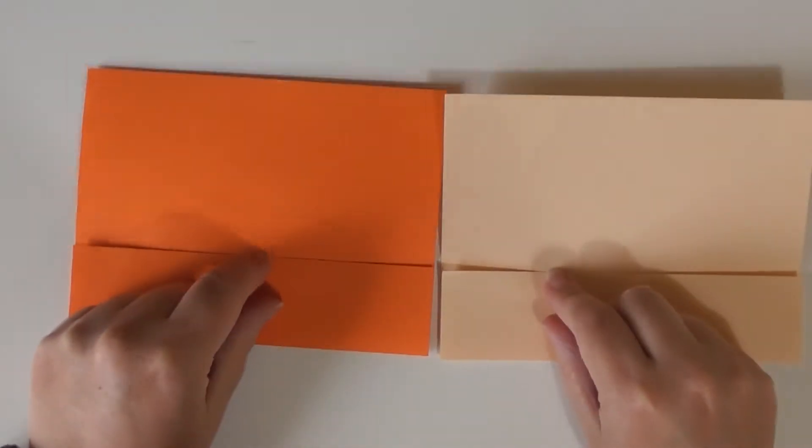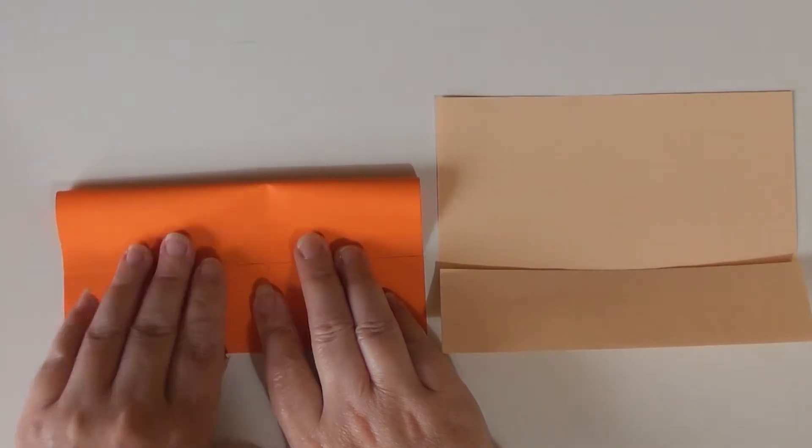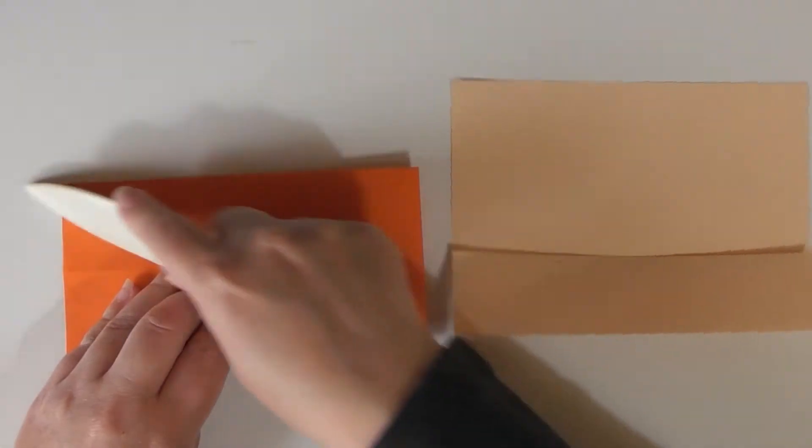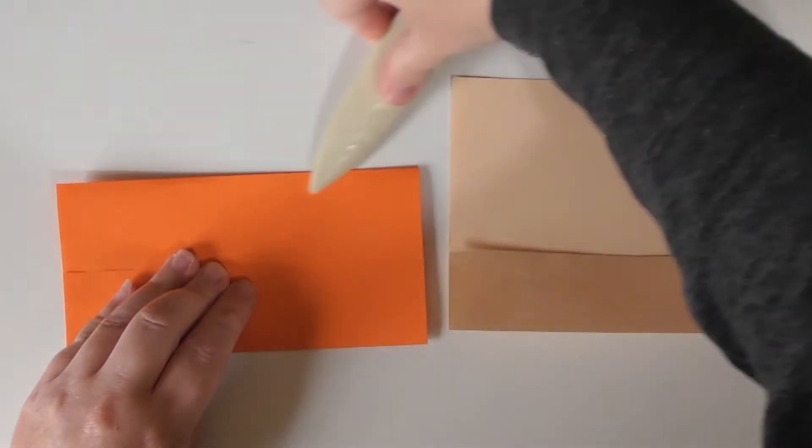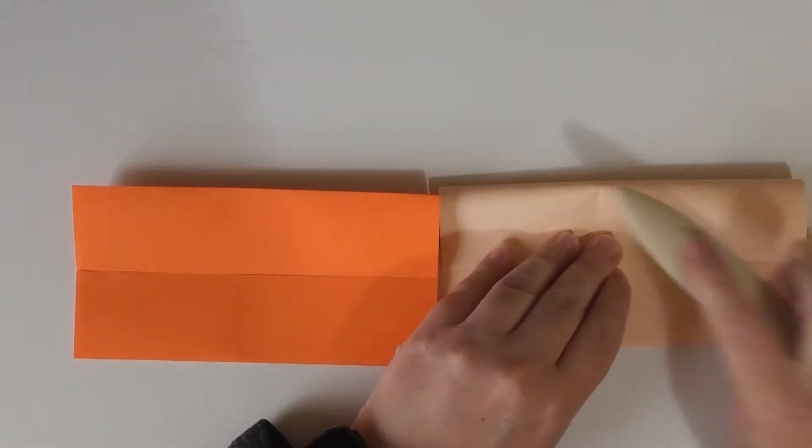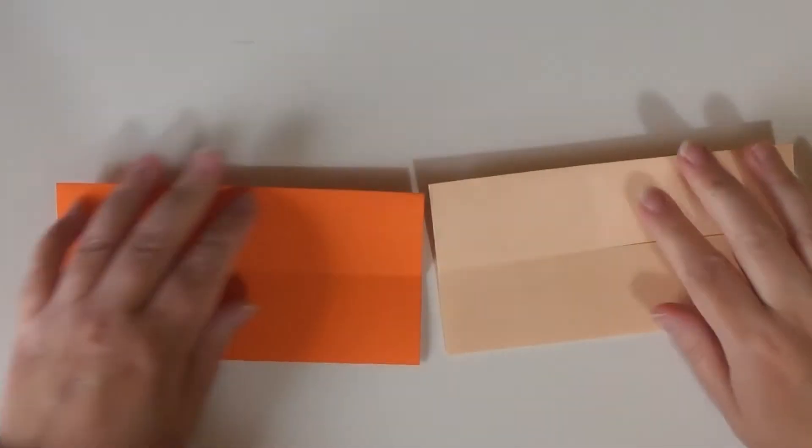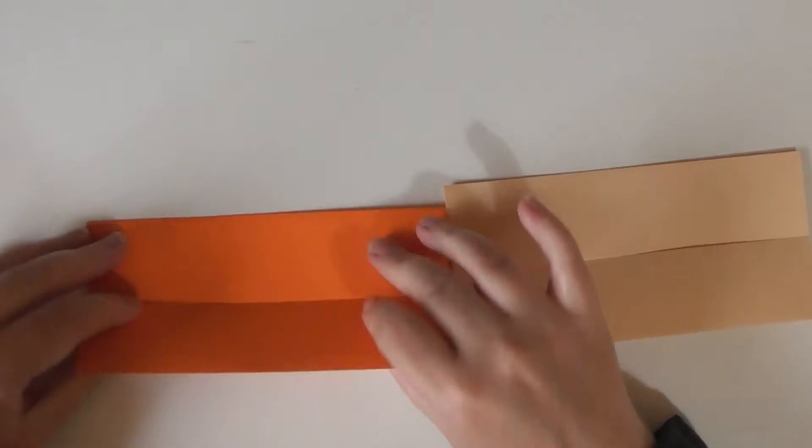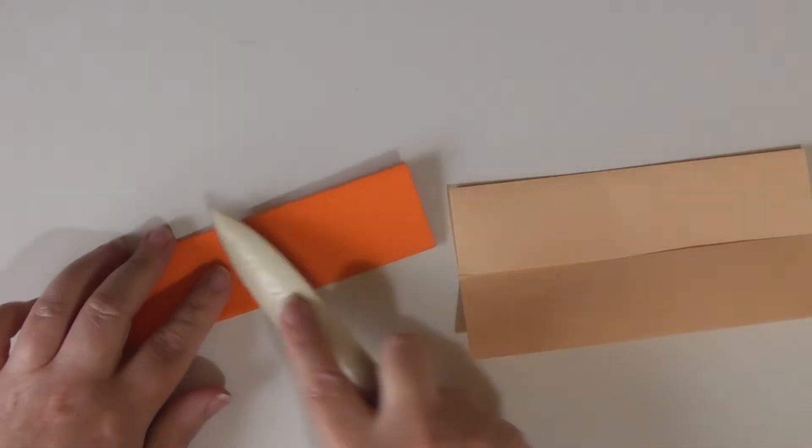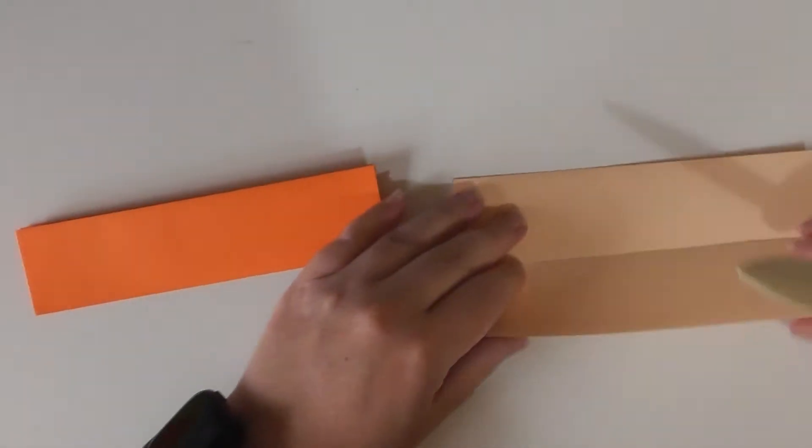And now we're going to bring these ones, the top edges down to the middle on both pieces. Now we're just going to close them up. So just close the open flap into the inside of it. So folding it in half of what's left basically. And that one.